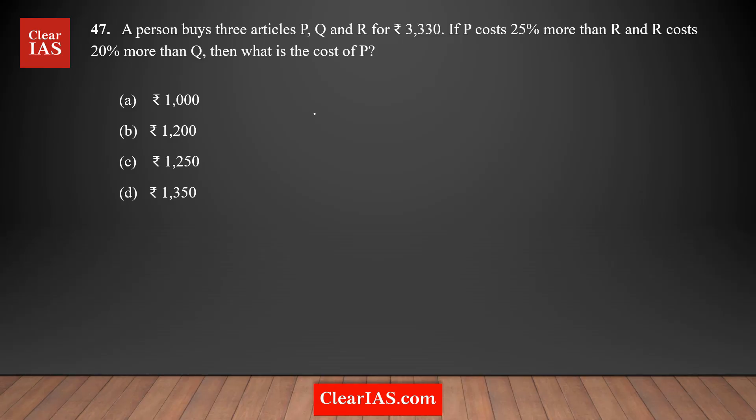Question number 47 is a percentage-based question. A person buys three articles P, Q, and R for 3330 rupees. This is the sum of the cost of all three products. There is a relationship between the cost of P, R, and Q given here. The question asks: what is the cost of P?